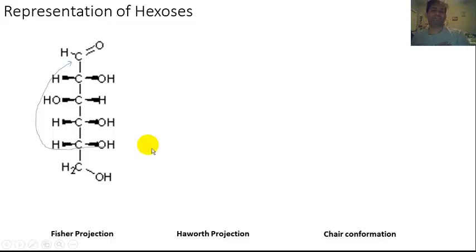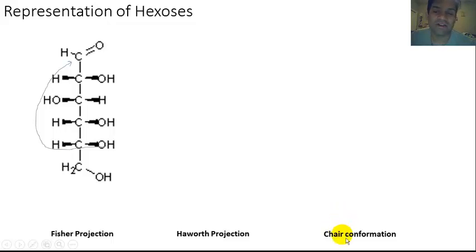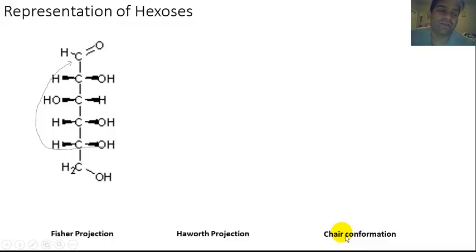We can represent hexoses, or six-carbon monosaccharides, by three different methods. One is a Fischer projection, the other is a Haworth projection, and since these are six carbons that have formed a ring, it's also a cyclohexane, and cyclohexane can be either in the chair conformation or ring flip to a boat conformation.